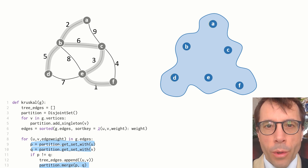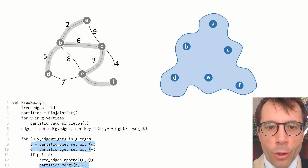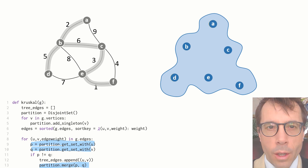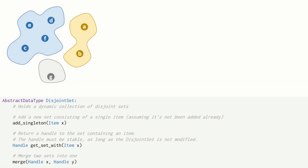The purpose of Kruskal's algorithm is to pick out the highlighted edges, but for this video what we're going to study is the data structure behind it — the Disjoint Set — and how to implement these three operations: AddSingleton, GetSetWith, and Merge. We ought to write out a proper abstract data type for this data structure. Press pause, have a read, then think how you would implement it, and then press play when you're ready.